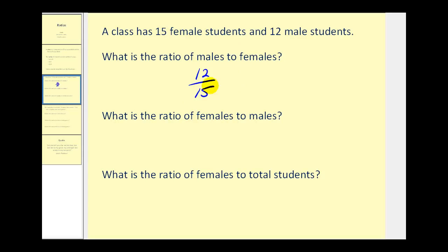Most of the time ratios are in simplest form, so we can simplify this just like we would simplify the fraction 12 fifteenths. Since 12 is 3 times 4 and 15 is 3 times 5, we can see they have a common factor of 3. So the simplified ratio would be 4 to 5.